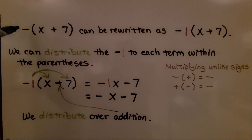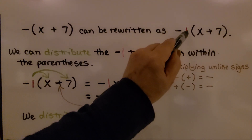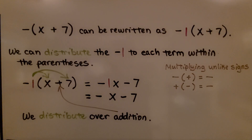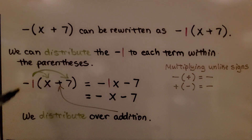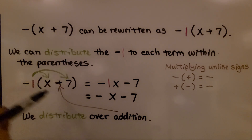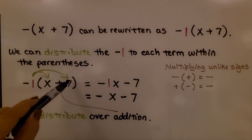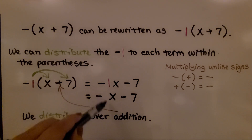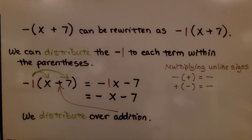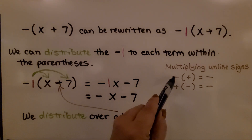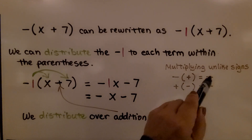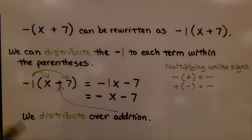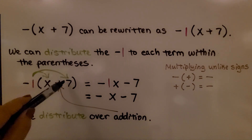So lone variables and lone negative signs have an invisible 1. If we see a negative sign and then x plus 7 in parentheses, it can be rewritten as negative 1 times x plus 7. We distribute this negative 1 to each term within the parentheses: negative 1 times x gives us negative 1x, and negative 1 times 7 gives us negative 7. We have negative x minus 7. Remember, multiplying unlike signs — negative times positive or positive times negative — gives a negative product.